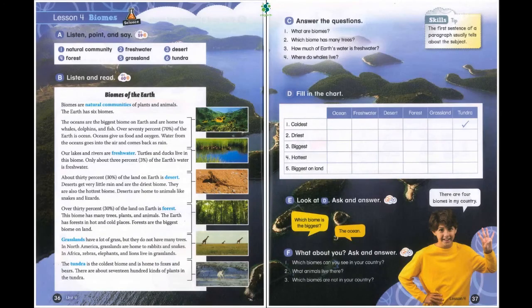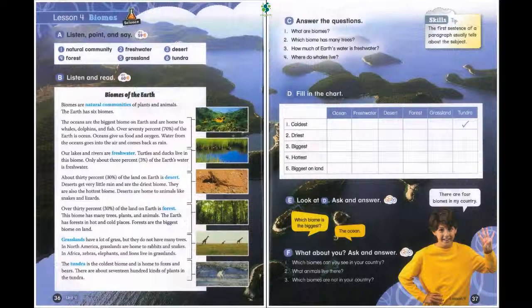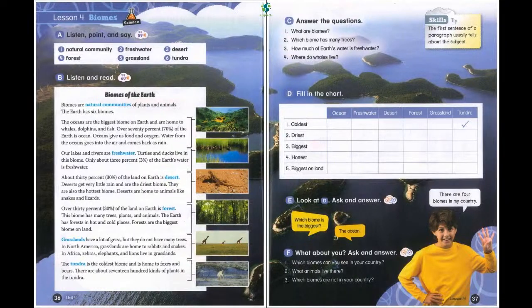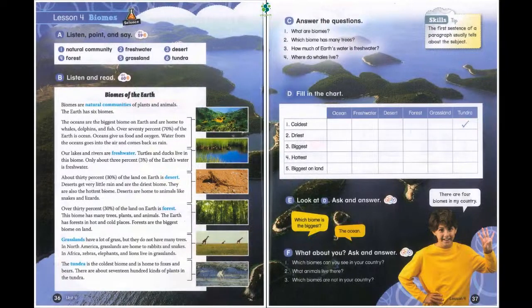Page 36. Lesson 4: Biomes. A. Listen, point, and say. One: natural community. Two: freshwater. Three: desert. Four: forest. Five: grassland. Six: tundra.